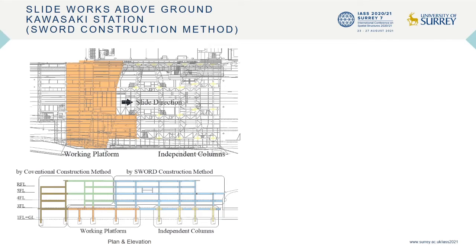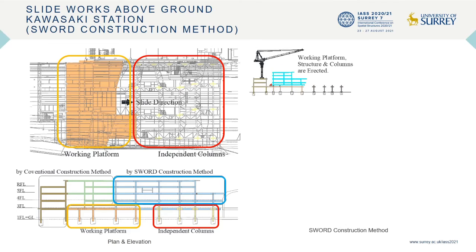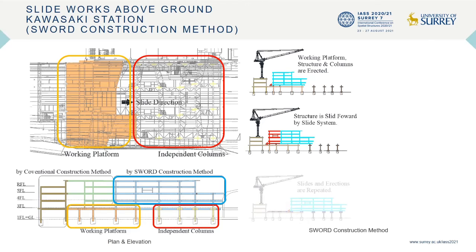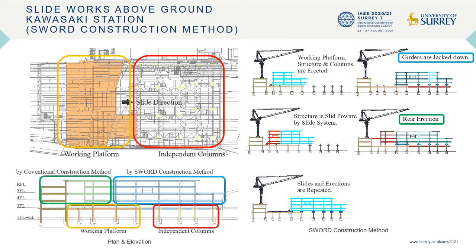This is Kawasaki Station. For this project, the sword construction method is applied. This method was developed in 2006 for erecting railroad buildings safely and efficiently. The structure is erected on the working platform and then pushed ahead towards the railway area. Because the girders of the building are used as slide rails, no extra temporary members are required.